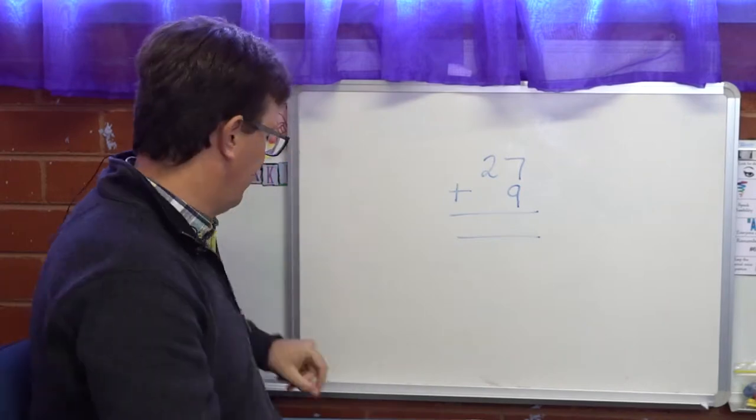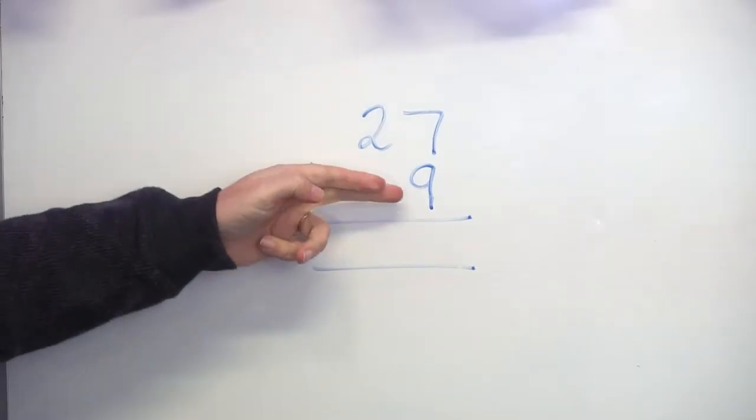In this video, I'm going to show you how to do 2-digit plus 1-digit addition with regrouping. So we have our problem: 27 plus 9.